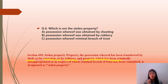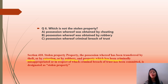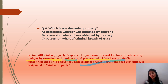Section 410 tells us which properties are stolen property. Robbery — yes, it is stolen property. Criminal breach of trust — yes, that is also stolen property. But option A — possession obtained by cheating — is NOT stolen property because Section 410 of IPC does not designate property obtained by cheating as stolen property. So option A is the correct answer here. You can also refer to Section 401 of IPC in your bare act.